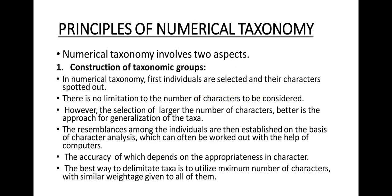Numerical taxonomy involves two aspects. First, construction of taxonomic groups: individuals are selected and their characters sorted out. There is no limitation to the number of characters to be considered — the larger the number of characters, the better the approach for generalization of the taxa. The resemblances among individuals are established on the basis of character analysis, often worked out with computers. The best way to delimit taxa is to utilize the maximum number of characters with similar weightage given to all of them.